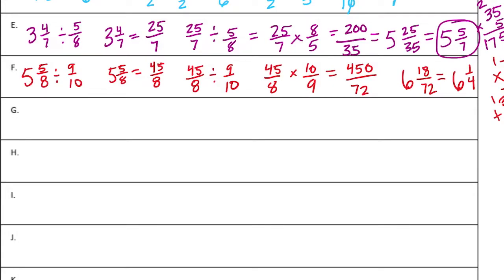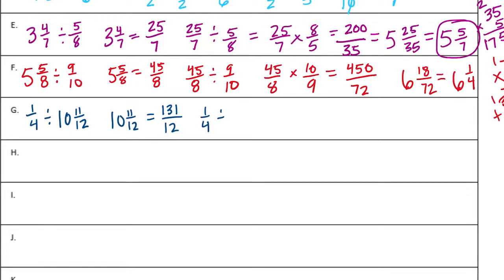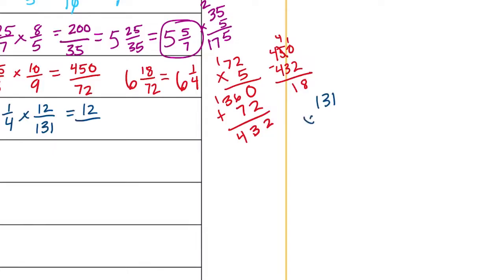Part G: one-fourth divided by ten and eleven-twelfths. Ten and eleven-twelfths equals ten times twelve is one hundred twenty, plus eleven is one hundred thirty-one twelfths. So we have one-fourth divided by one hundred thirty-one twelfths. If we invert and multiply, that's times twelve over one hundred thirty-one. One times twelve is twelve. Four times one hundred thirty-one: four times three is twelve, carry the one, four times one is four plus one is five, so we get twelve five-hundred-twenty-fourths.